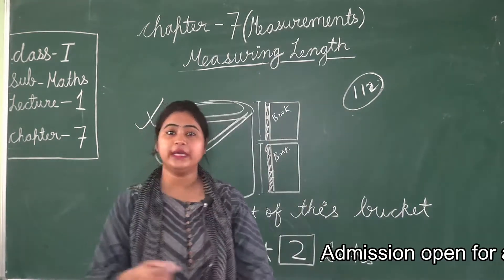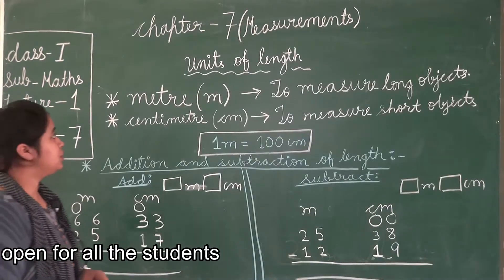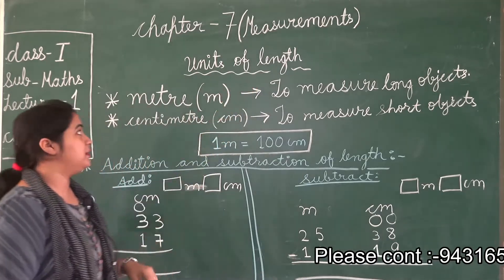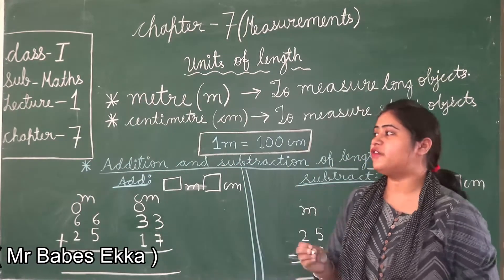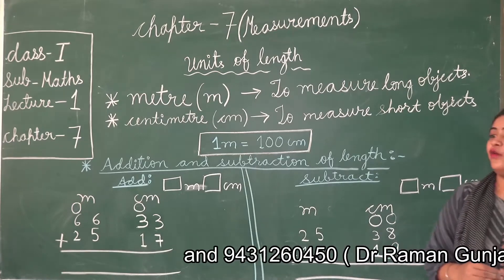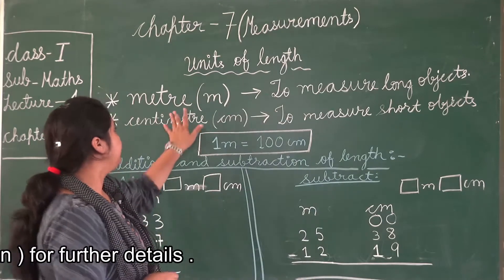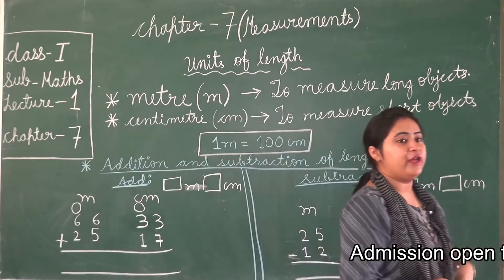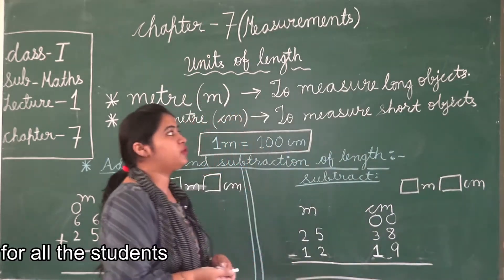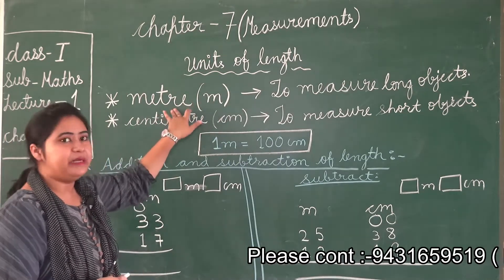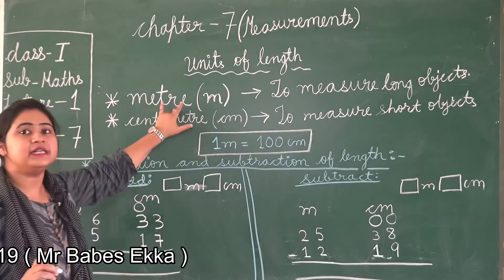Next, we are going to read about units of length. There are two units for length: first is meter and second is centimeter. The units of length are very important. For example, when we are buying cloth or sarees, we use meter, because meter is used to measure long objects. The short form for meter is small 'm'. We use meter to measure long objects.